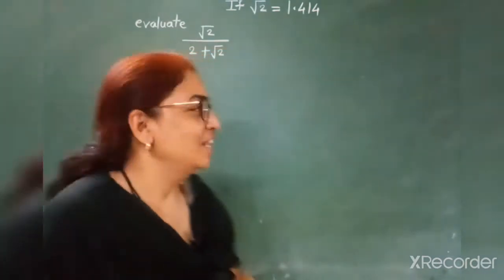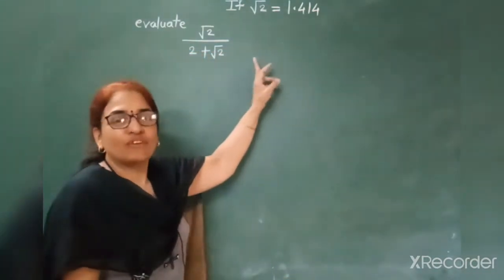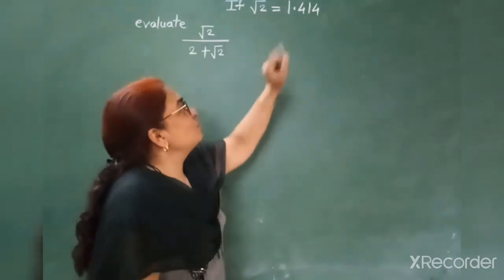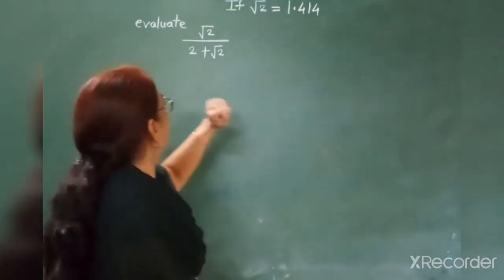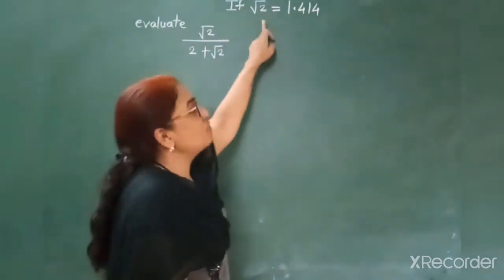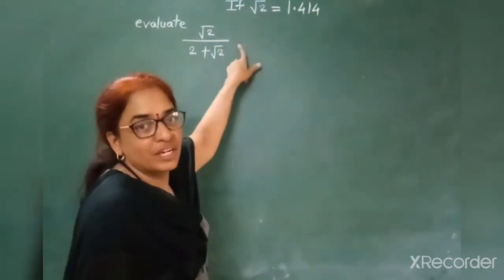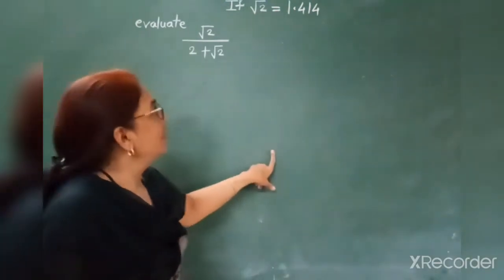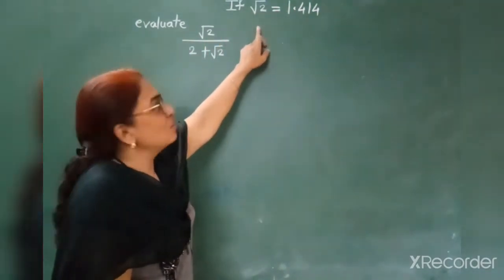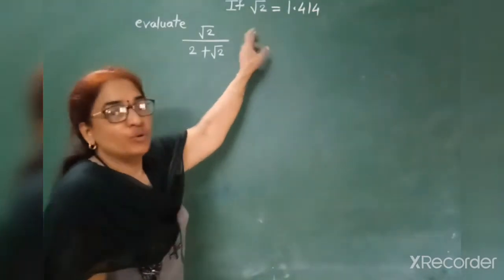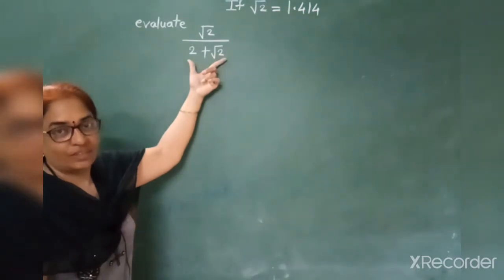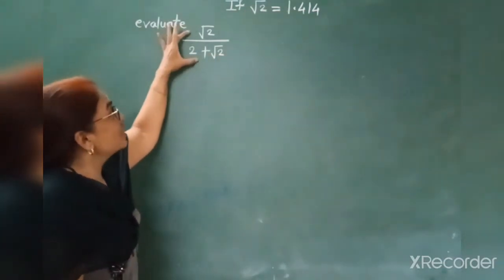Good morning students. This is an example from NCERT Exemplar. If root 2 is equal to 1.414, you have to find the value of this problem — that means you have to use this value of root 2 in this irrational number and find its value. Before putting the value of root 2 equal to 1.414, you have to rationalize the denominator of this irrational number.